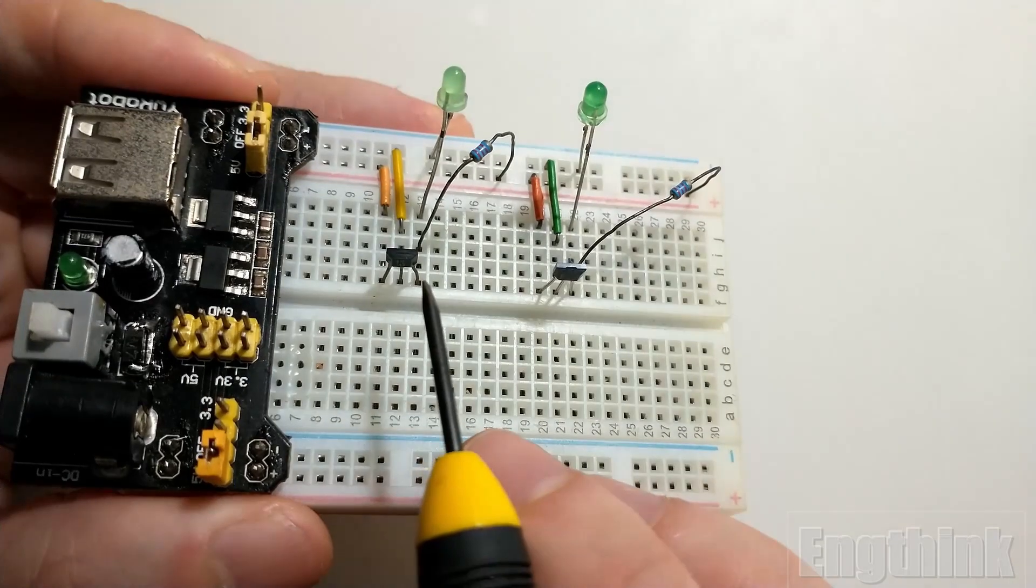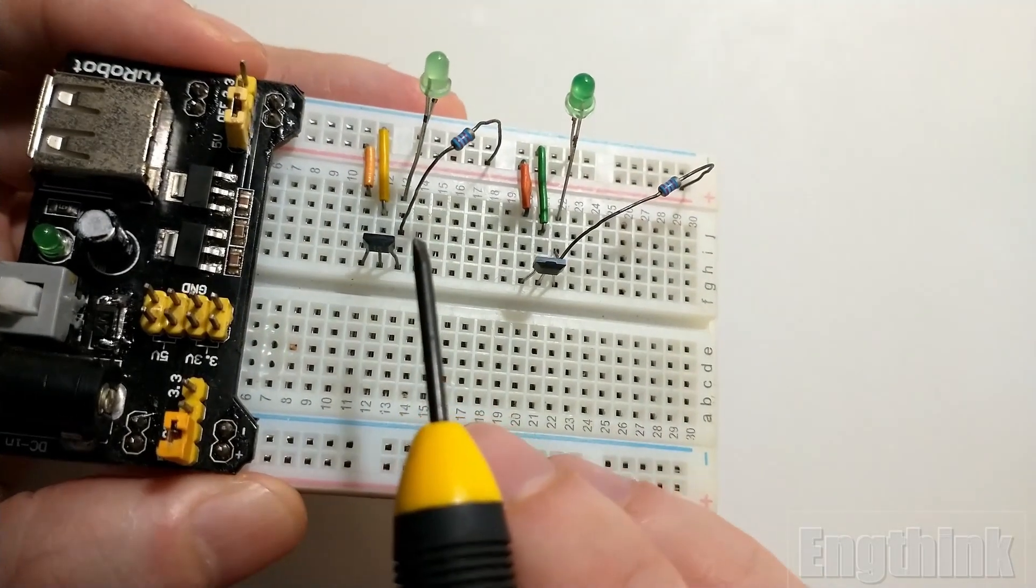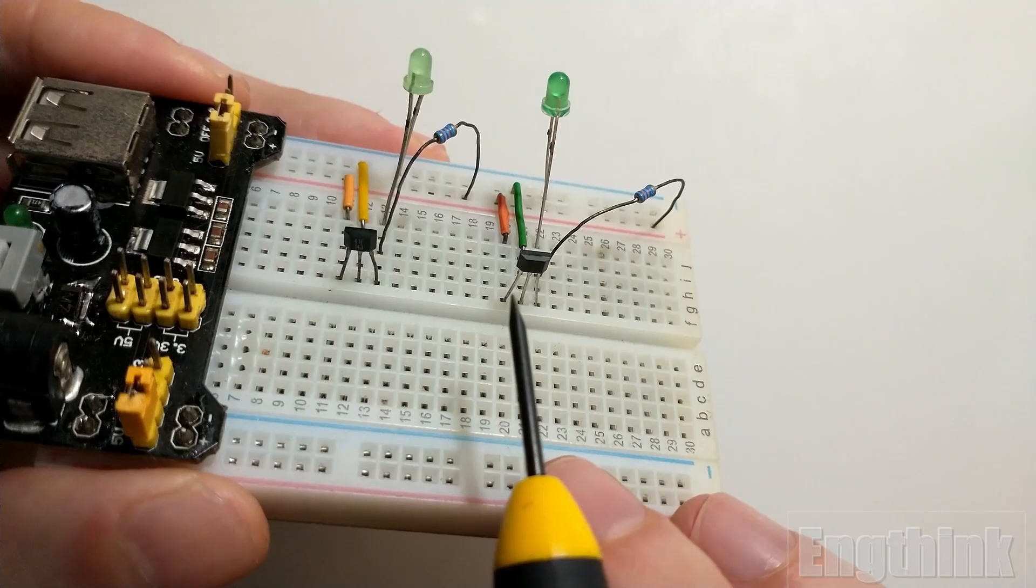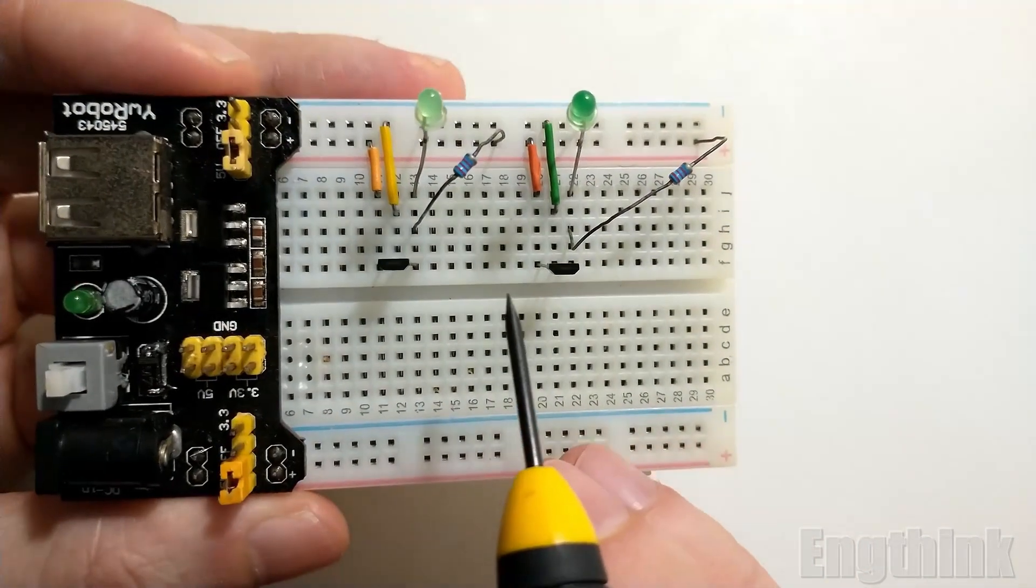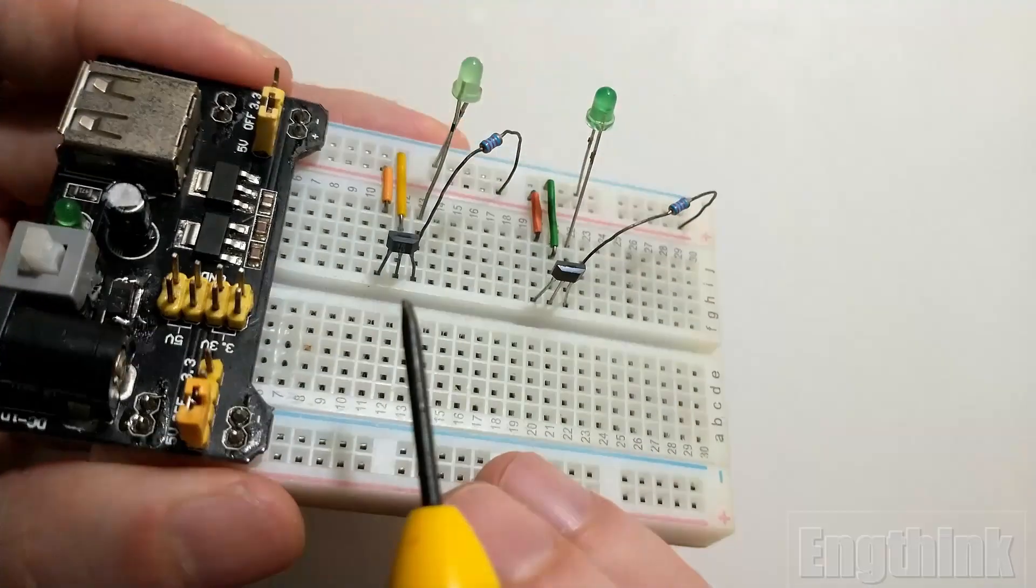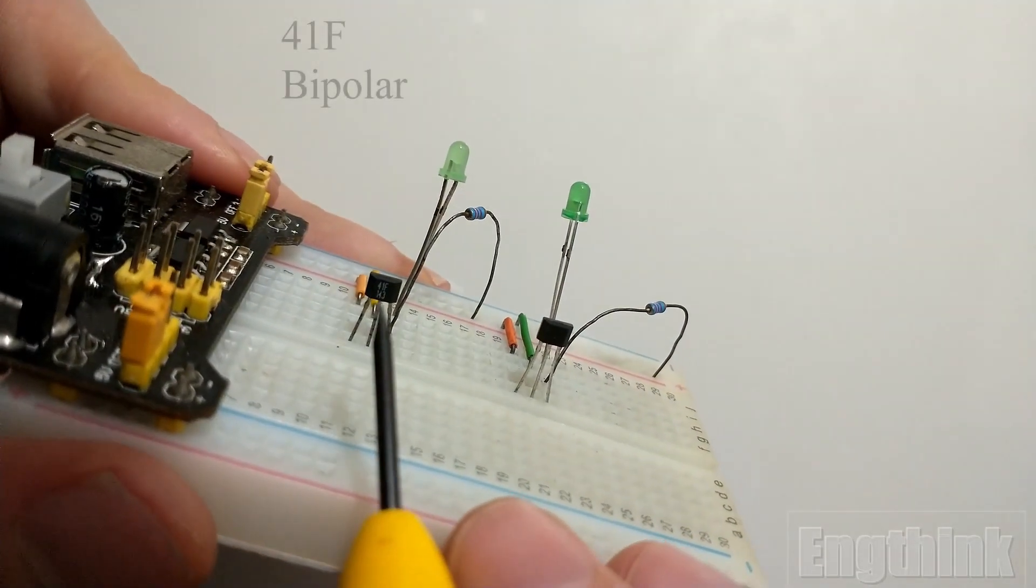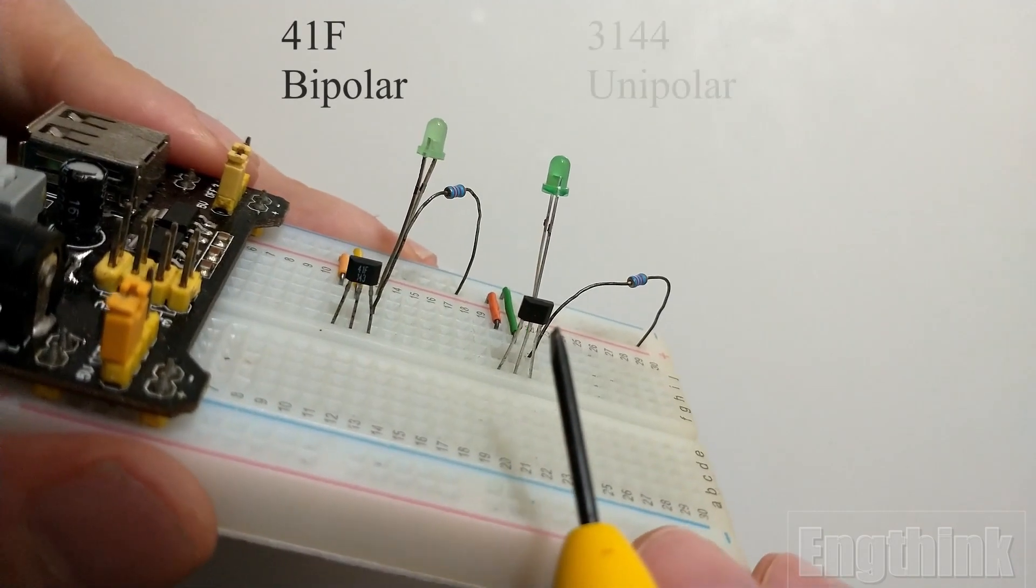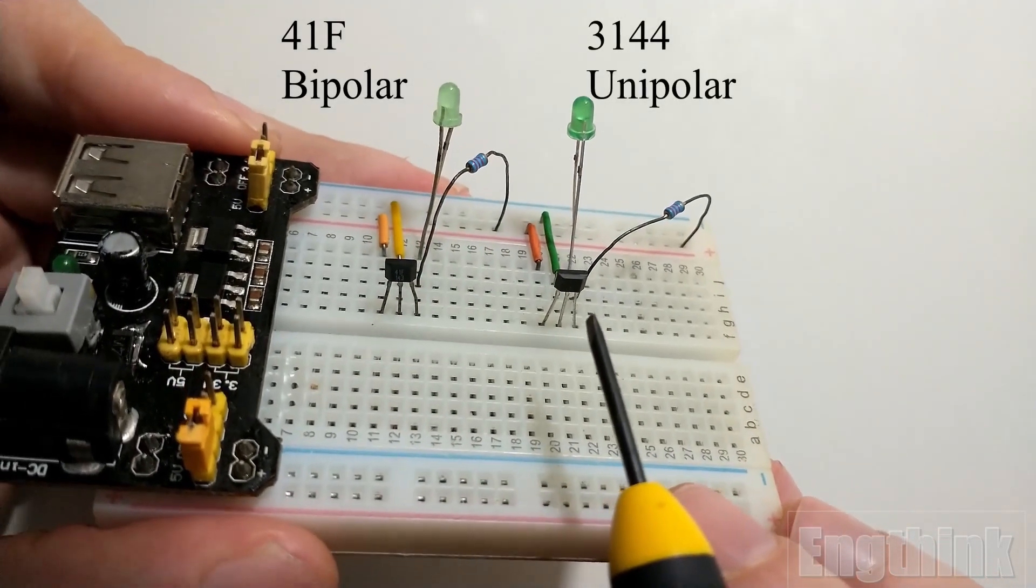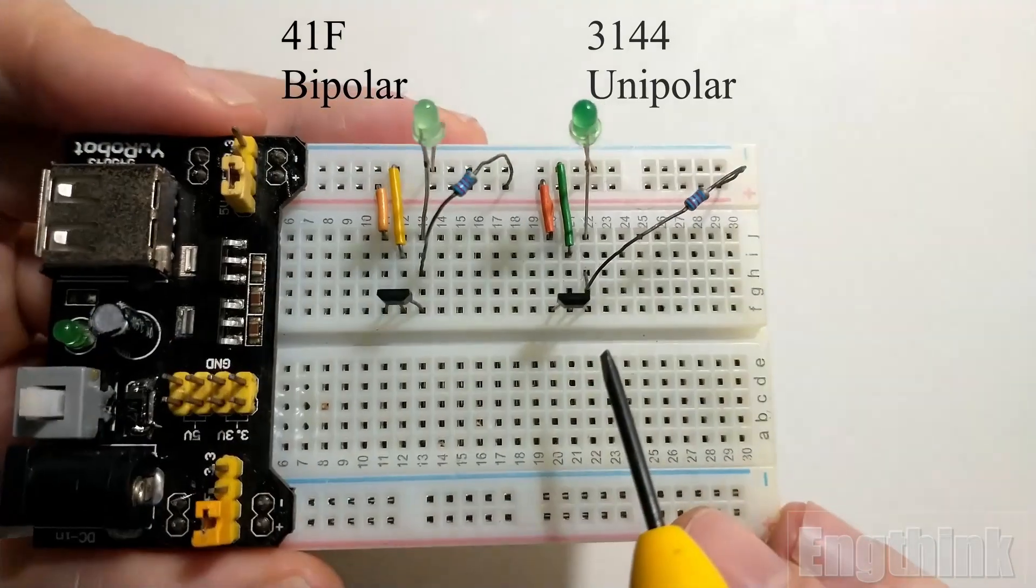For the Hall effect sensor on the right side of the breadboard, the sequence of the pins and the function is the same. So it doesn't matter if the Hall effect sensor is unipolar or bipolar—the pin numbers respect the same order and have the same function.